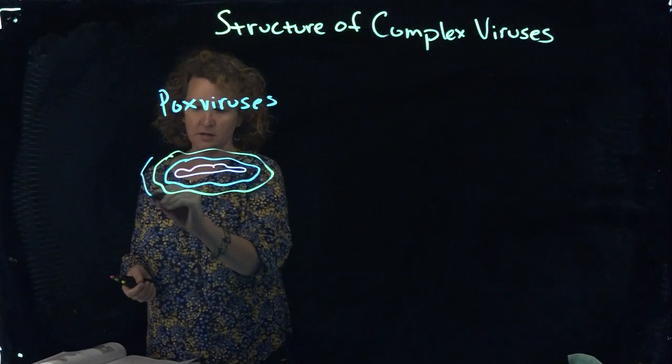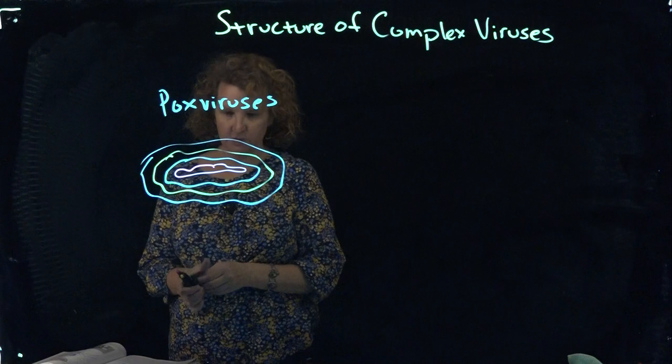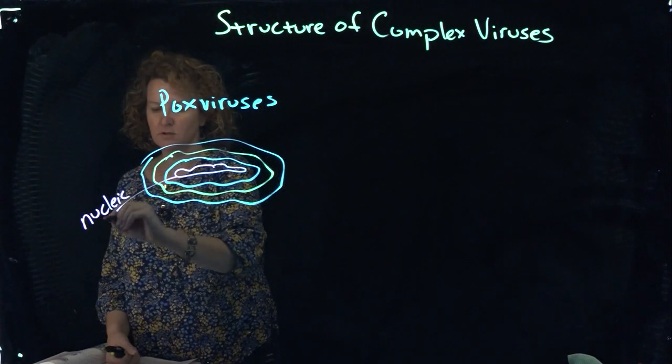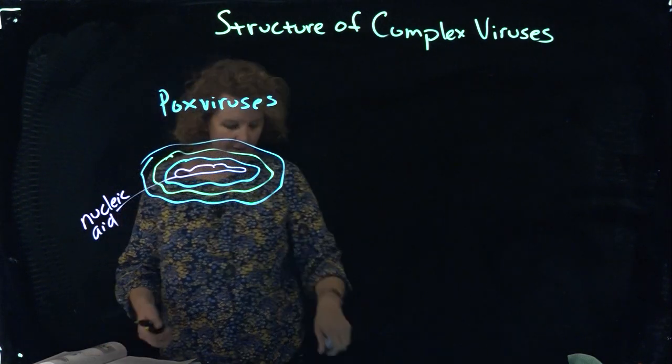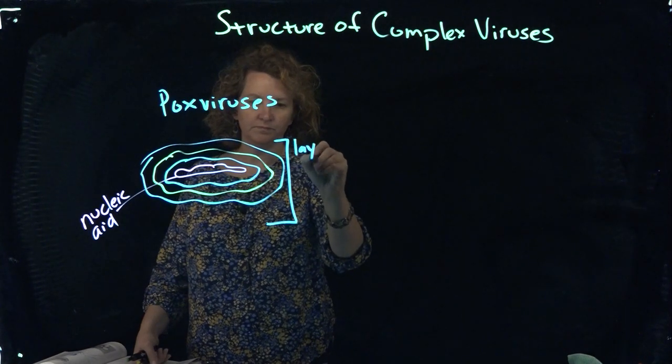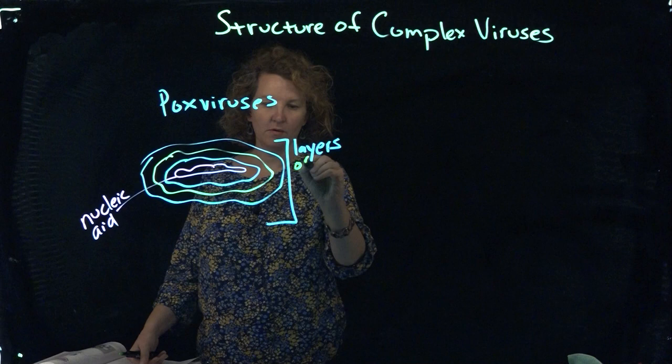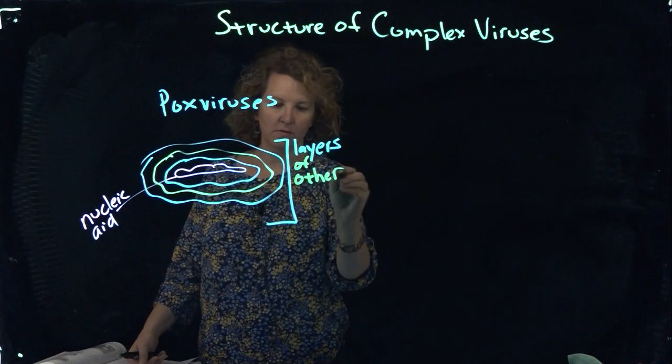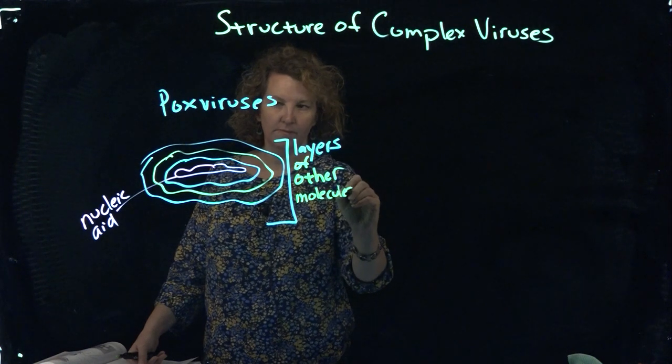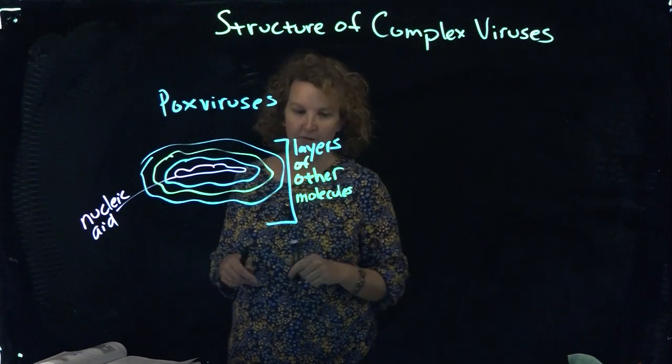And I'll use blue here to just remind you these are mostly protein based. So it still has sort of that traditional capsid type structure around there, but it's not in the shapes that we're used to seeing. The nucleic acid is in the middle, and then you're just going to have various layers. You don't need to know all the layers, just want you to know that there's other viral types out there.